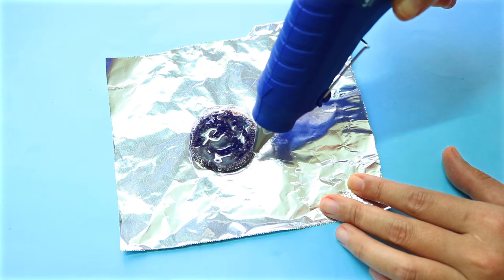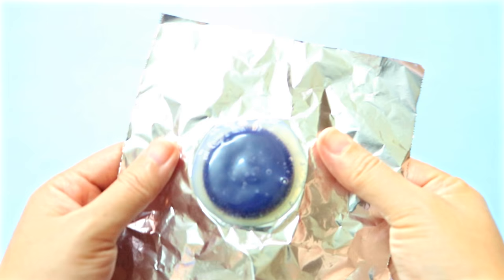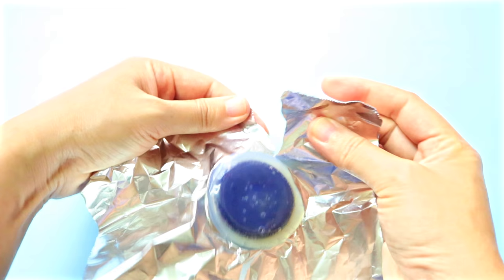And make sure you cover the round edge too. Wait about 10 minutes for the glue to cool and dry, and then try to remove as much aluminum foil as you can.